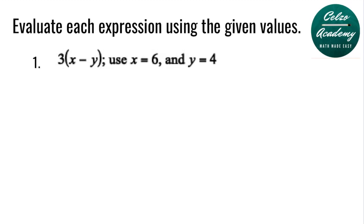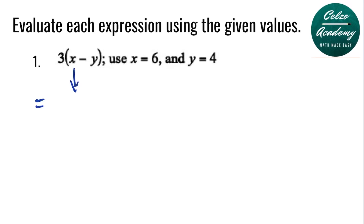Evaluate 3 times the quantity x minus y, using x equals 6 and y equals 4. In evaluating this algebraic expression, the first step is to substitute the value of x and the value of y. So we have 3 times the quantity 6 minus 4.